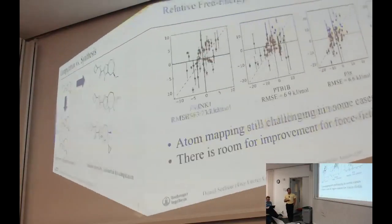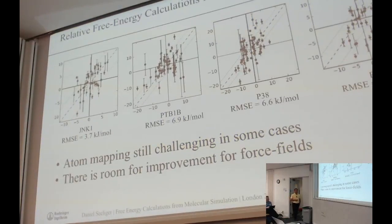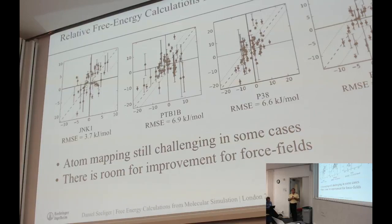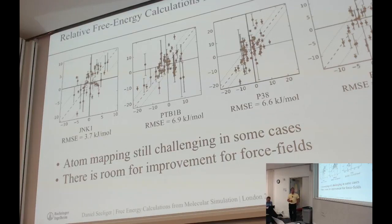Here is how alchemical free energy calculations work in our hands, on a number of representative public data sets. For those interested in technical details: we use GROMACS with the GAFF force field and PMX, which was already described just before the coffee break, with a non-equilibrium protocol. The general observation is: there are cases where it works pretty well, cases which are mediocre, and cases where it simply does not work very well — and this is a very general observation we also saw with other targets.